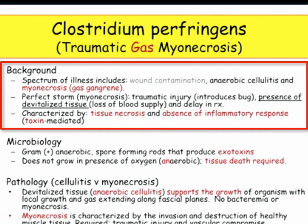Tissue necrosis with no inflammatory response — there's no inflammatory response in part because of the toxin, but also because of microthrombosis: small vessels thrombose, so you're not getting blood in there. If there's no blood, there's no inflammatory response, or there's a relative paucity of response.